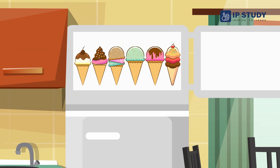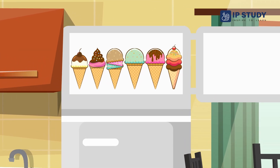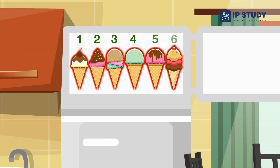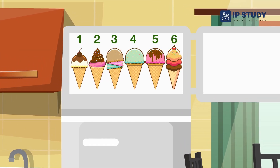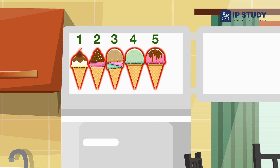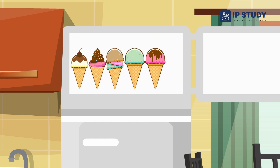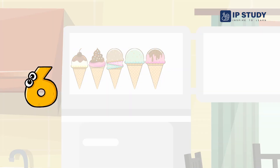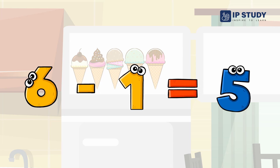See these ice creams. There are 6 ice creams in the fridge. Now I eat 1 ice cream. Then I have 5 ice creams in the fridge. 6 minus 1 is equal to 5.